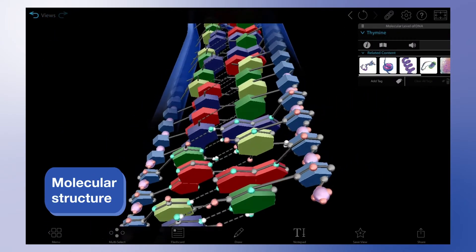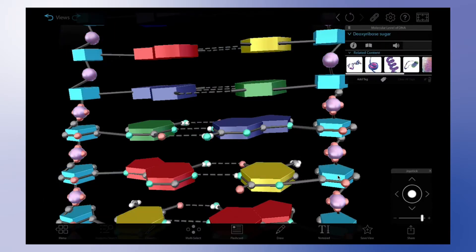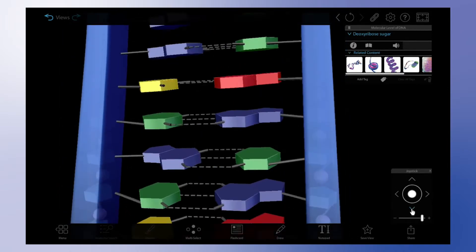Start with the nucleotides, each consisting of a nitrogenous base, a phosphate group, and a sugar molecule, and show how they fit together to form that twisted ladder double helix shape we all know and love.